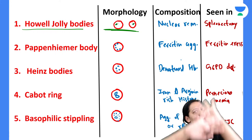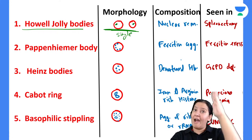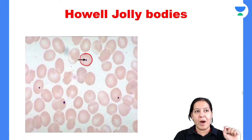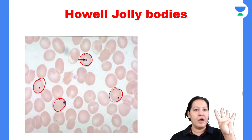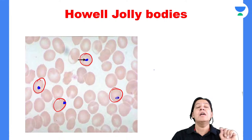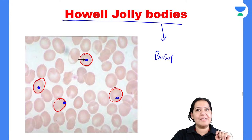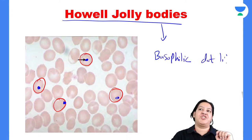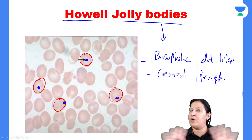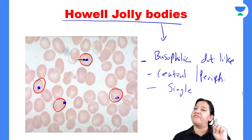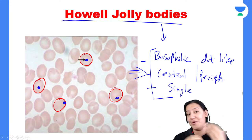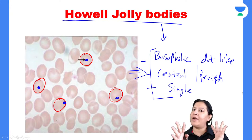Howell-Jolly body: I've drawn a small RBC with a dot-like structure inside it. It can be central or peripheral — it is not fixed — but it is always single. So Howell-Jolly body is a basophilic (dark blue) dot-like structure. It can be anywhere in the cytoplasm but is always a single dot in one RBC.